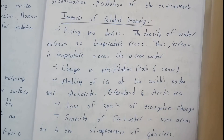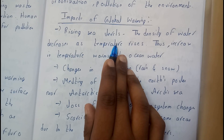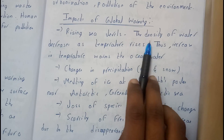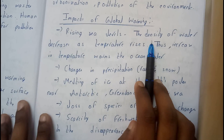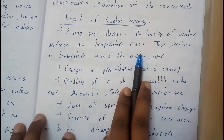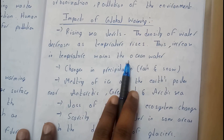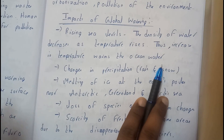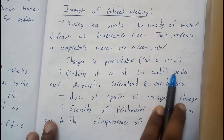Impact of global warming: Rise in sea levels. The density of water decreases as the temperature increases. Since global warming increases the temperature of our planet, it warms the ocean water and thus the sea level rises.